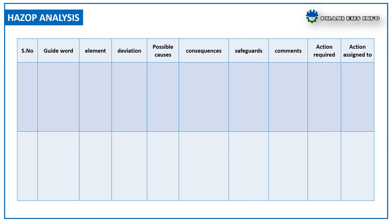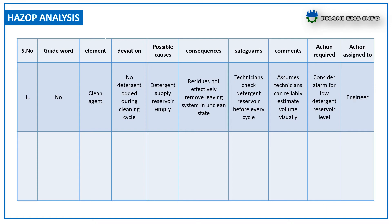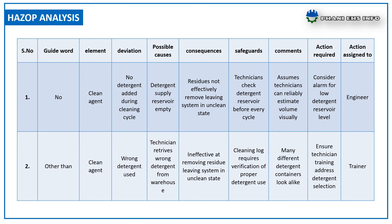Here is an example using a cleaning agent deviation. Guide word: NO. Element: cleaning agent. Deviation: no detergent added during cleaning cycle. Possible causes: detergent supply reservoir empty. Consequences: residues not effectively removed, leaving the system in an unclean state. Safeguards: technicians check detergent reservoirs before every cycle. Comments: assumes technicians can reliably estimate value visually. Action required: consider an alarm for low detergent reservoir level. Action assigned to: engineer.